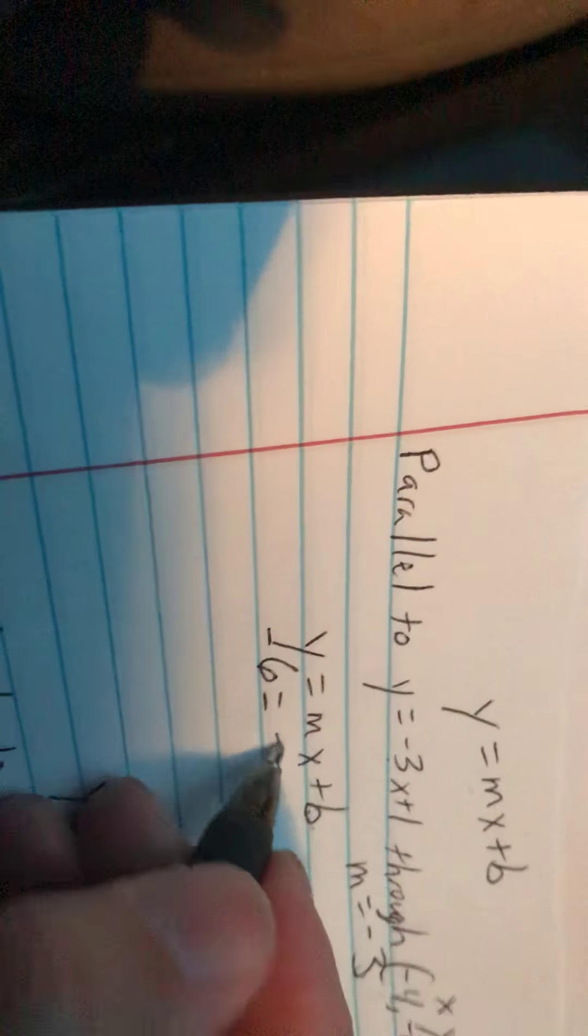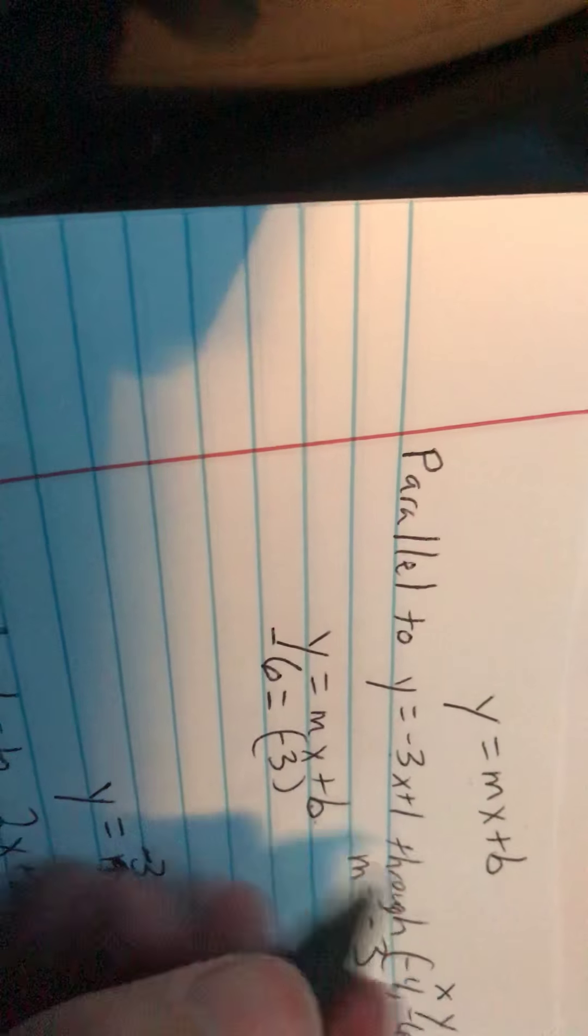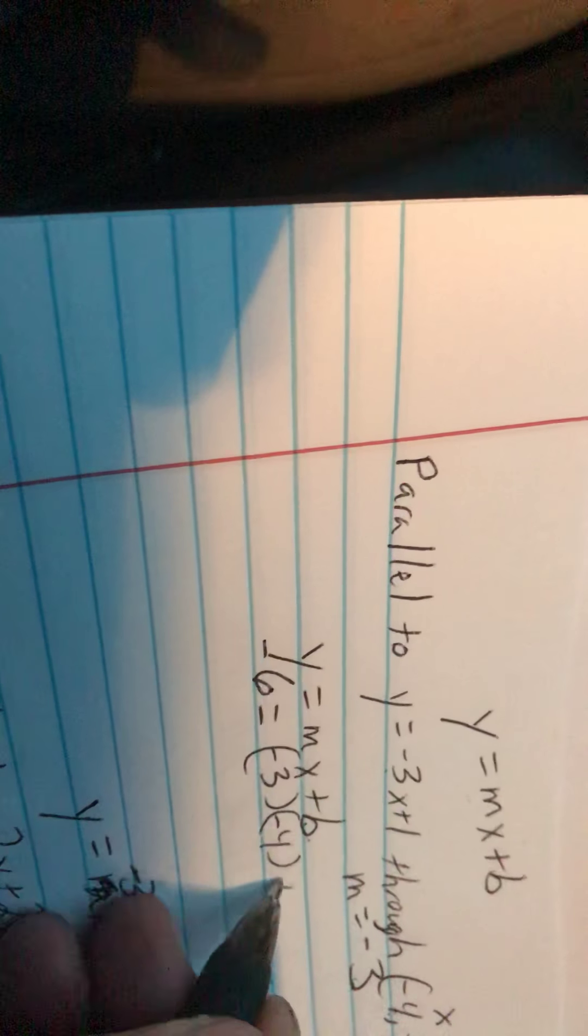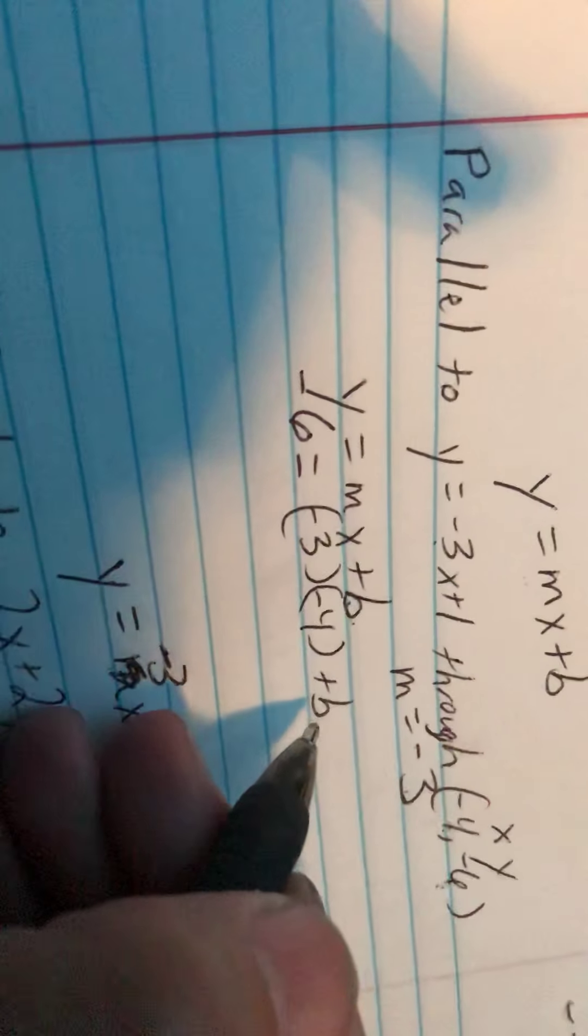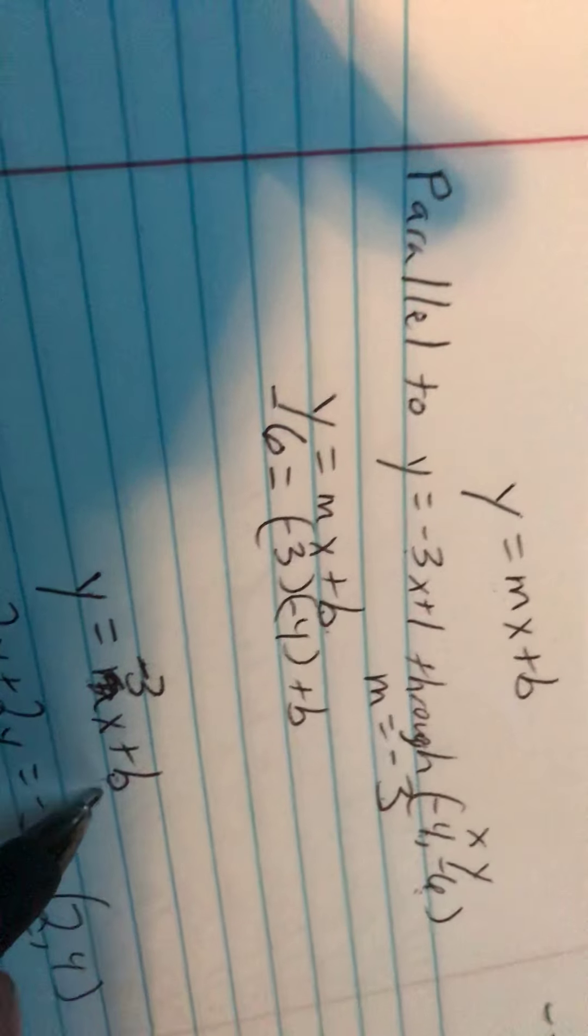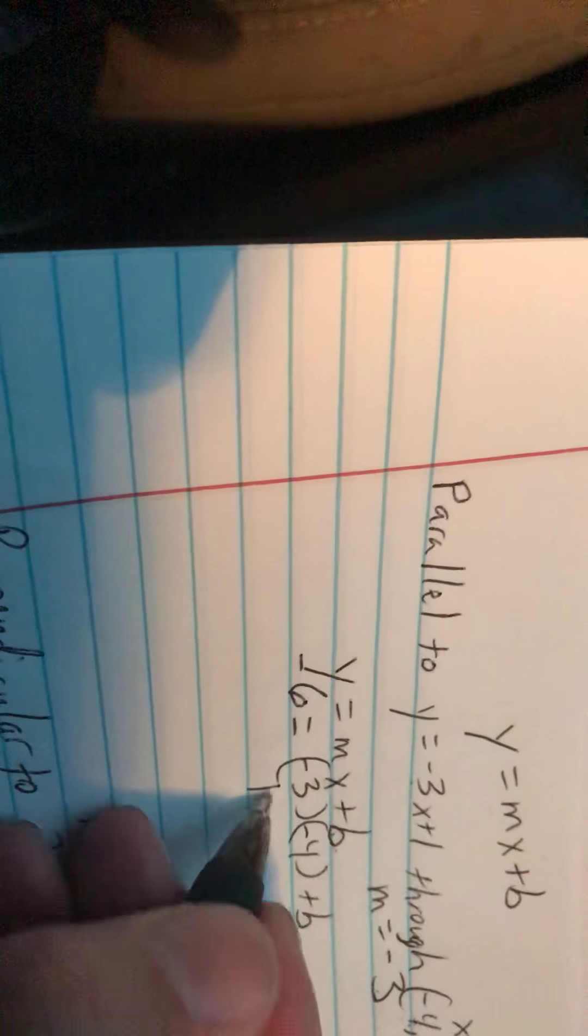And when we plug one, two, three variables or values in for these variables, we'll be able to solve for b. So y is negative 6, so we've got negative 6 equals m's negative 3 times x is negative 4 plus b. And then we just solve this equation for b and plug it in right there. So negative 3 times negative 4 is 12 plus b.